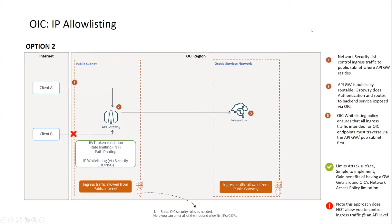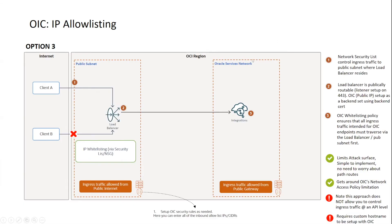Option three is a slight variation, where instead of an API gateway we use an OCI load balancer. Similar flow: we have a load balancer sitting in a public subnet, and that load balancer will forward traffic to OIC. This is not at a path-based level at all, so you don't need to deal with the experience of exposing OIC APIs as different paths.